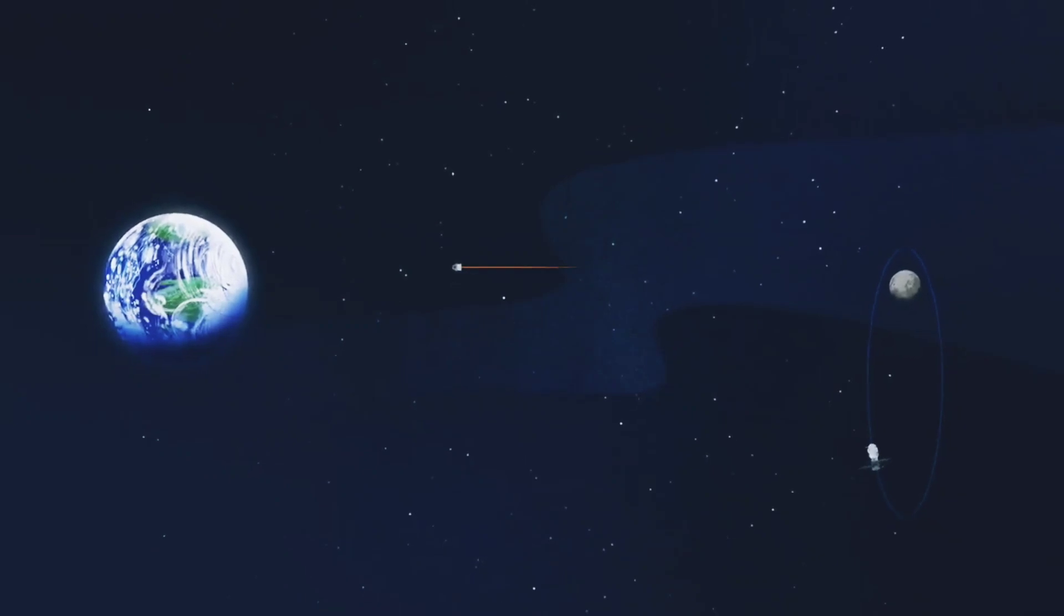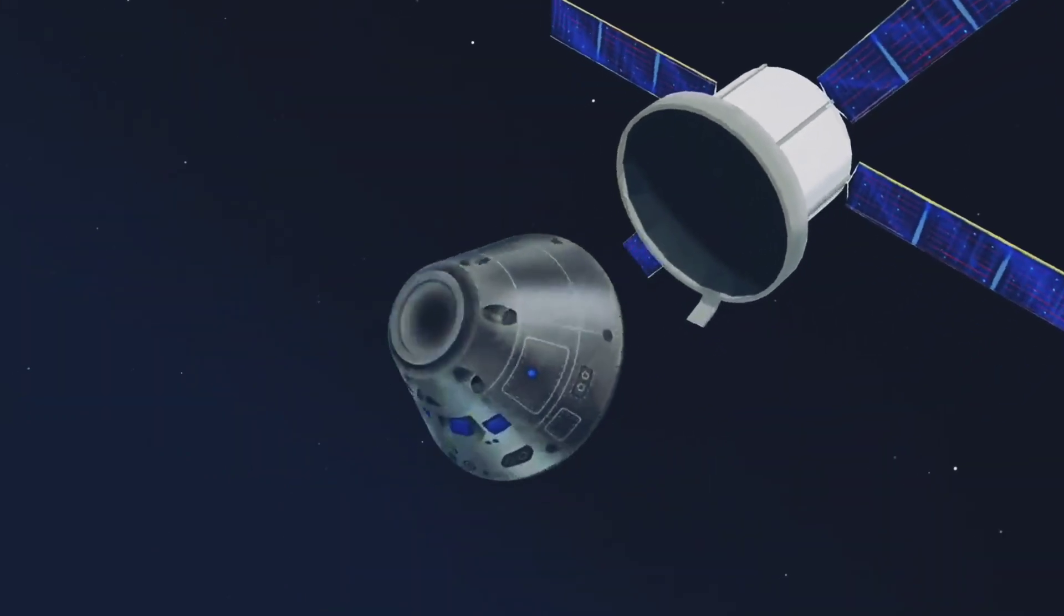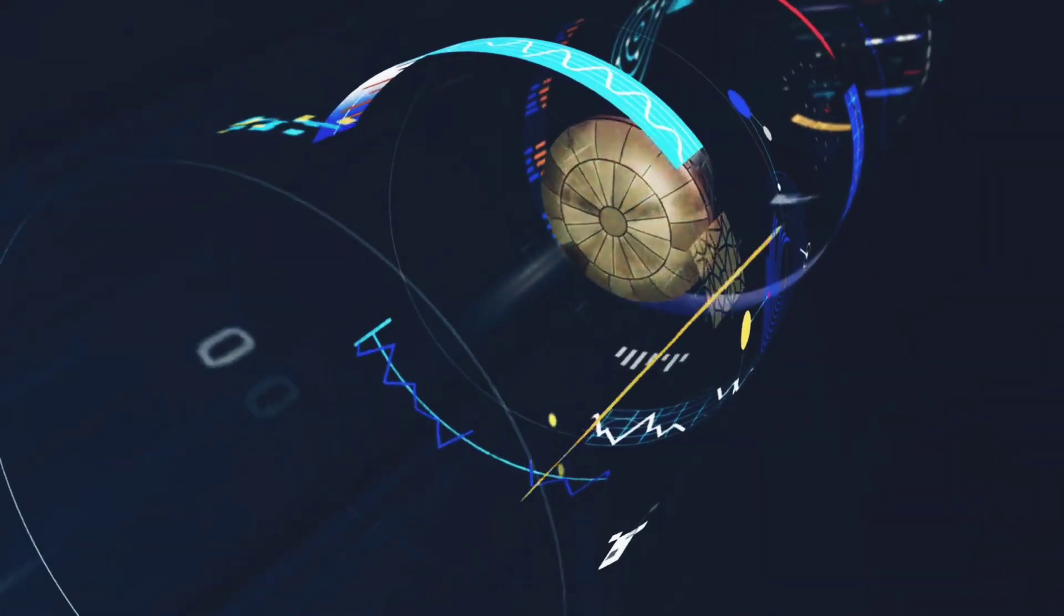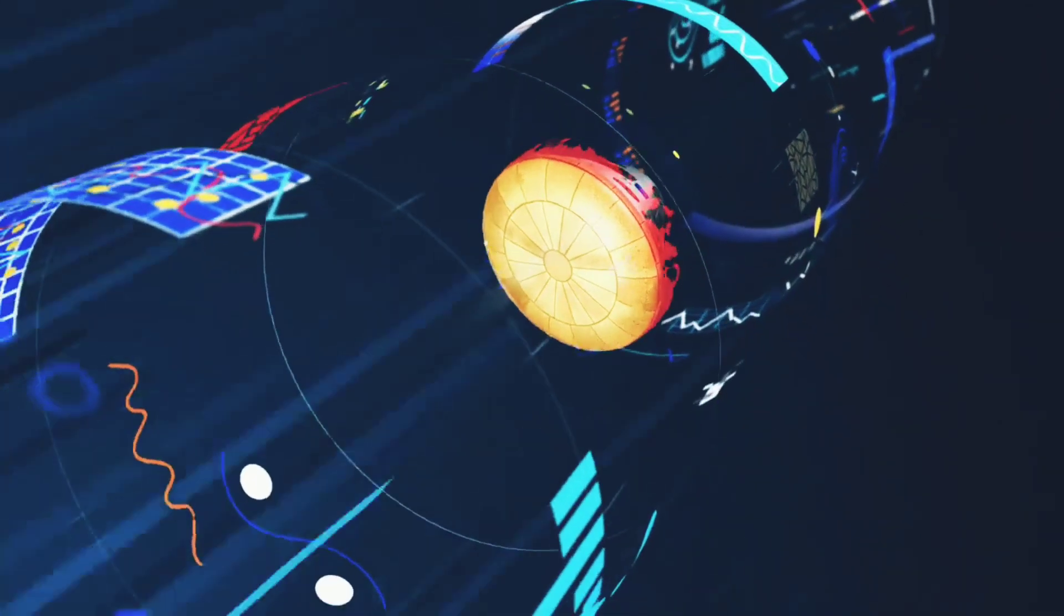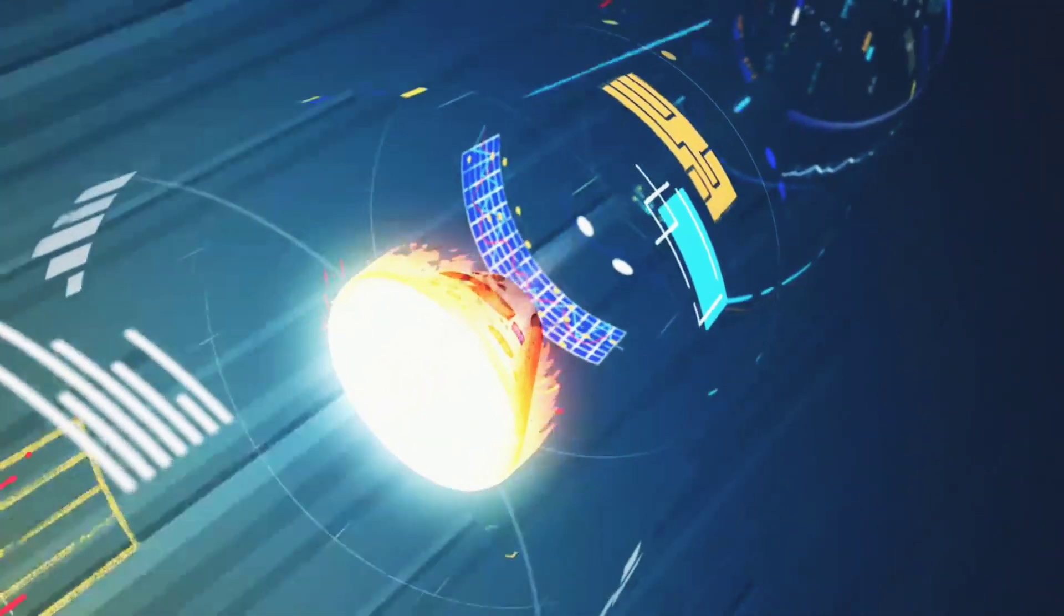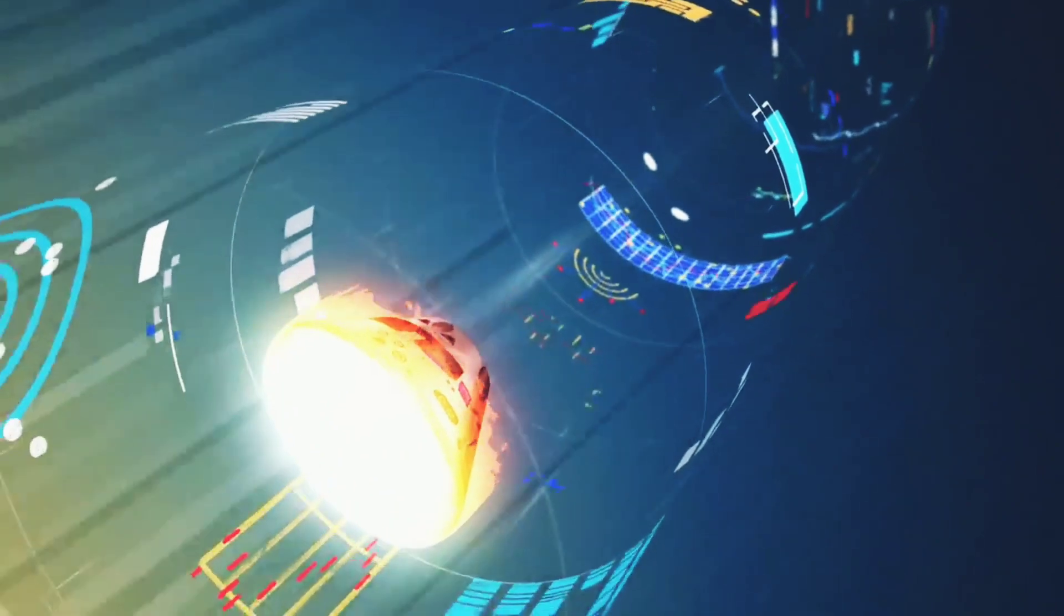As they near the end of this journey, the service module is released, and the crew module is oriented heat shield first. Entering Earth's atmosphere at 25,000 miles per hour, the friction of air slows Orion considerably, while also subjecting it to temperatures of 5,000 degrees.